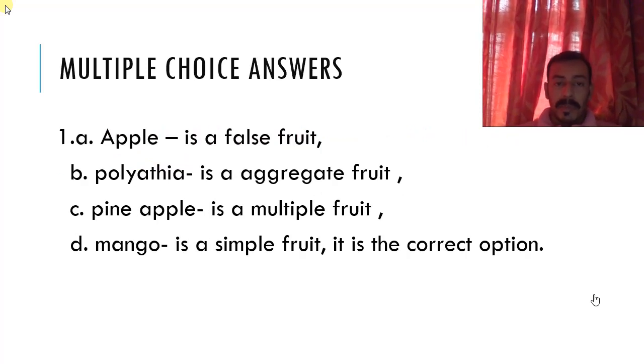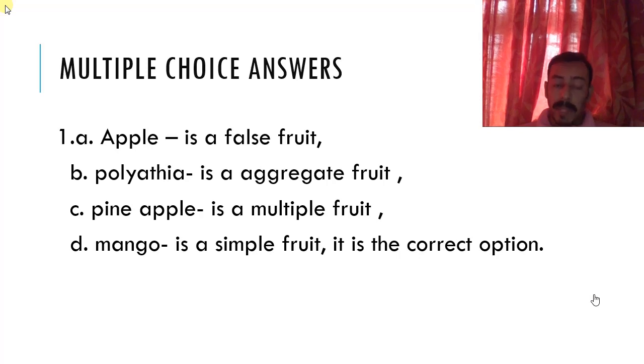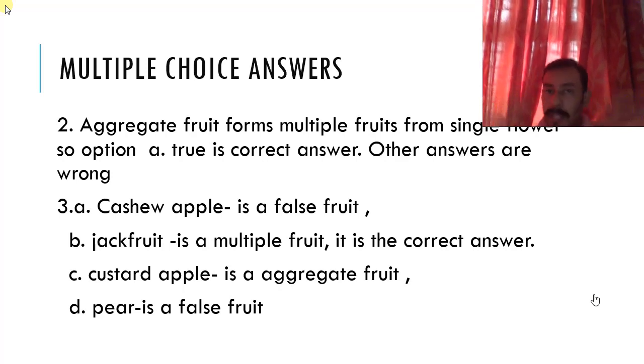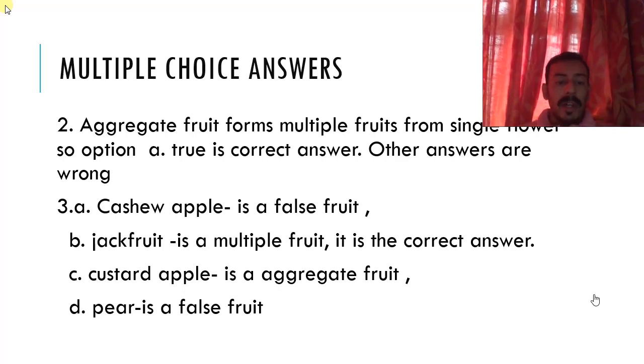First, apple is a false fruit. Palatia is an aggregate fruit example. Pineapple is a multiple fruit. Mango is a simple fruit. It is the correct option. So in the second section, we have aggregate fruits form multiple fruits from a single flower. So option A is true. It's the correct answer. The other answers are totally wrong. In third, we have cashew apple is a false fruit. Jackfruit is a multiple fruit and it is the correct answer because it has a common covering. Then we have custard apple which is an aggregate fruit and pear which is a false fruit.